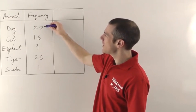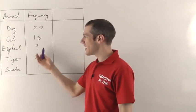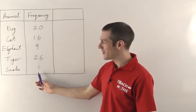So the frequency here tells you that 20 people picked a dog as their favorite animal. 16 people went for cats, 9 went for elephant, 26 for tiger and one person, there's always one, went for snake.